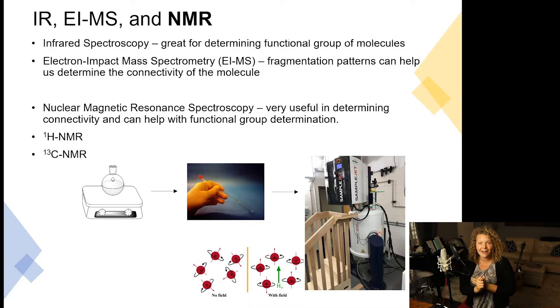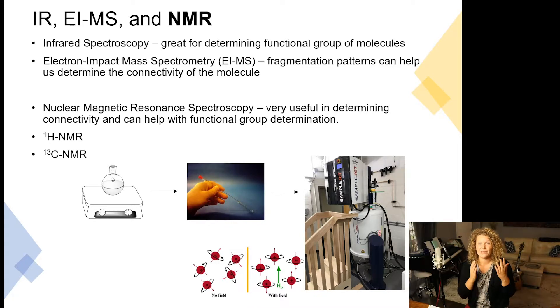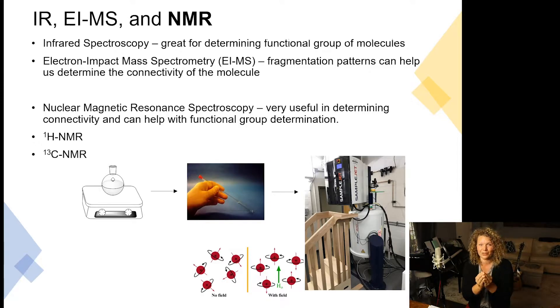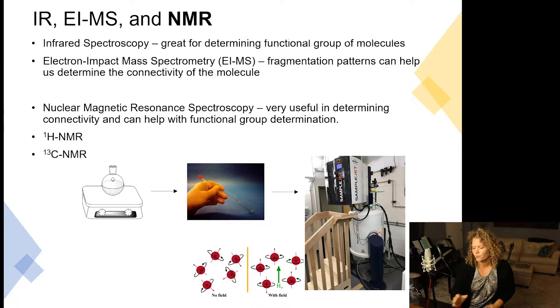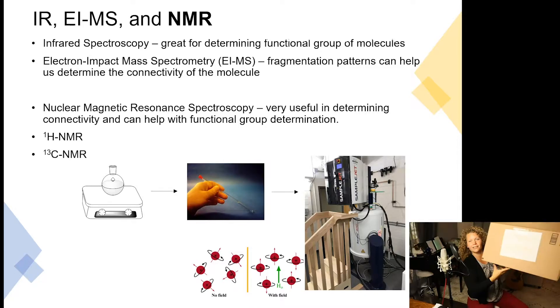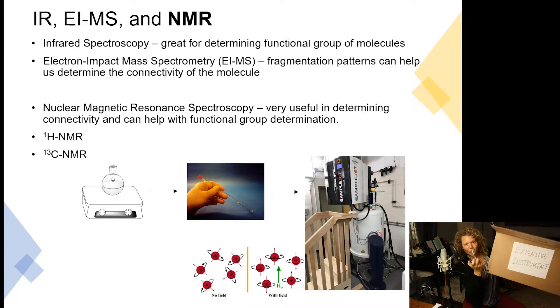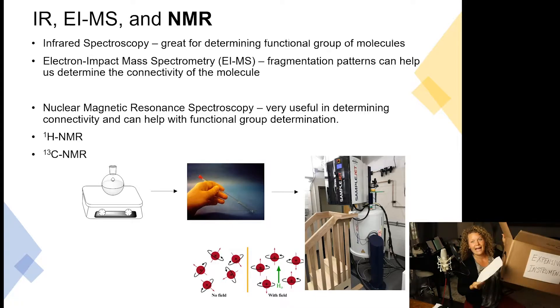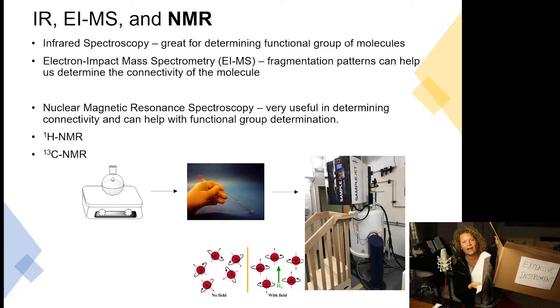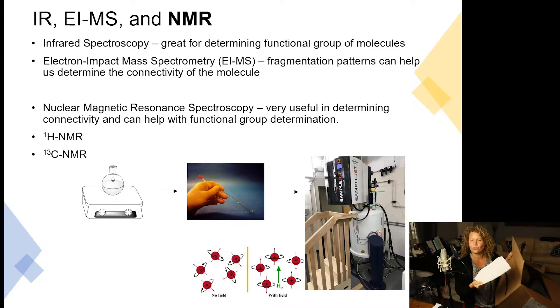Today we're going to be learning about NMR spectroscopy, an amazing technique we'll use for the rest of this course. We've already learned about IR and a little bit about EI mass spec, though we won't use EI mass spec in this course. Whereas with IR we were looking at bonds, in NMR we're looking at nuclei. We take our pure product, put it in the instrument, get a spectrum, work up the data on a computer, and analyze the information.